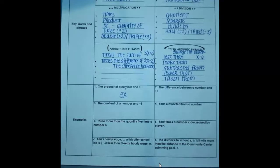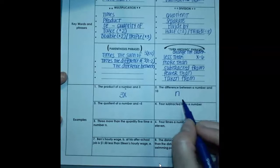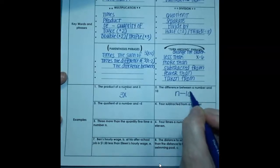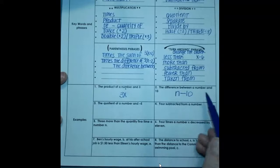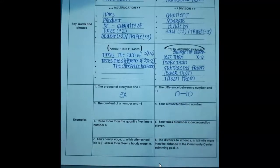Number two. The difference between a number and ten. We don't know what that number is. We can use whatever letter we want. So a number, maybe I'll call this one n. The difference between, that means subtraction, a number and ten. Now do you see how we wrote it in the same order? Number and ten. And we'll put subtraction between them. It wasn't one of our turnaround phrases.